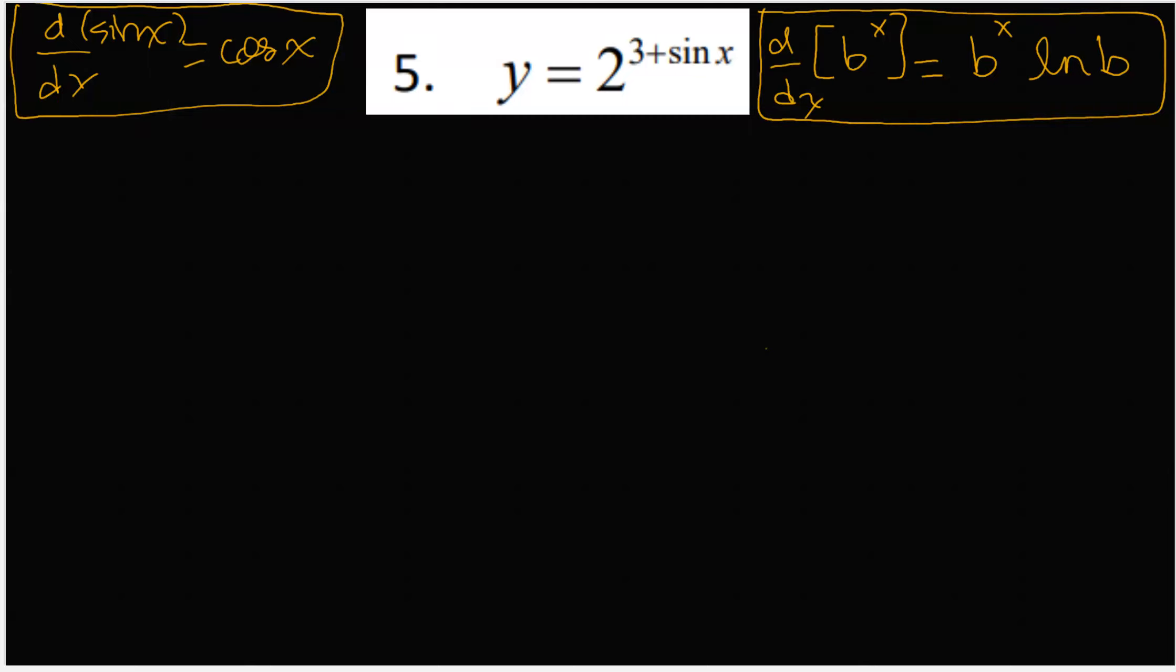Here we go. The chain rule is always there - we always pay attention to the chain rule, right? So dy/dx equals the derivative of 2 to some power, which is 2 to that power multiplied by ln of the base, which is 2. That's the derivative of the outside function multiplied by the derivative of the inside function, which would be cosine of x.